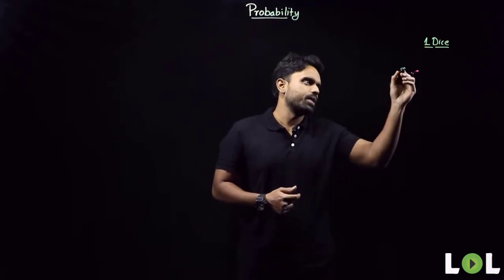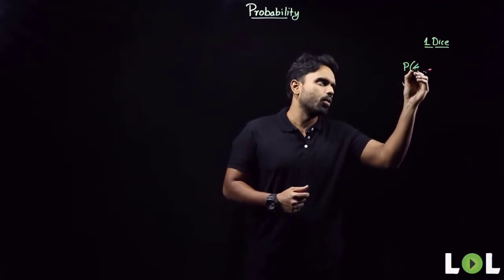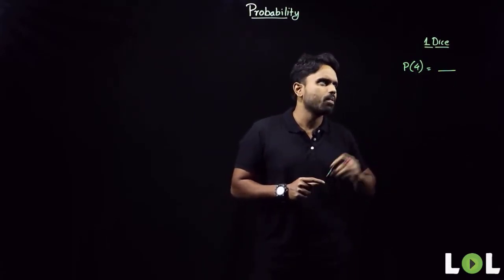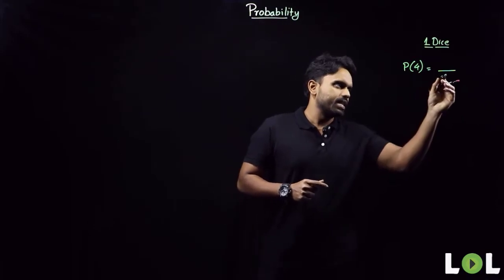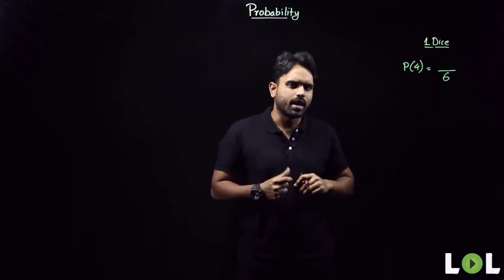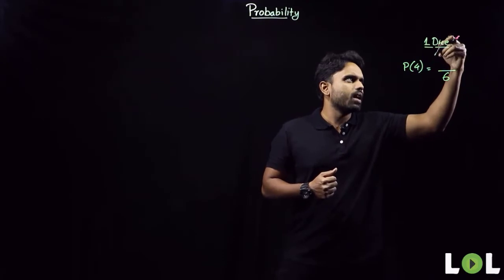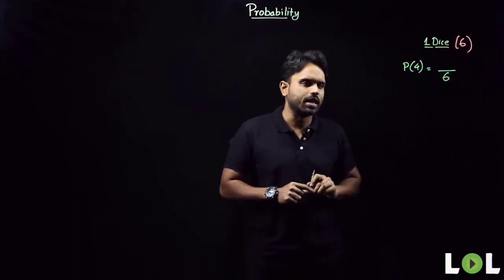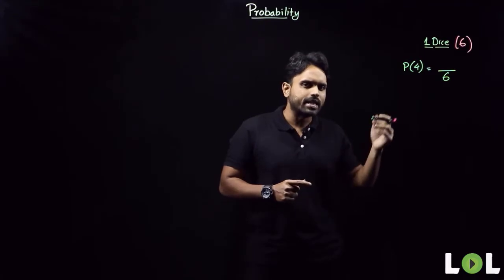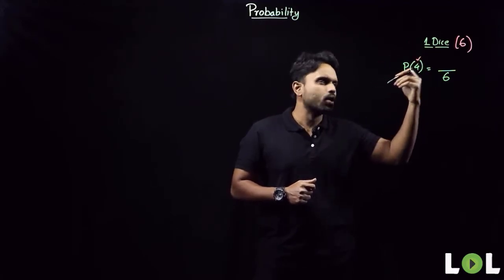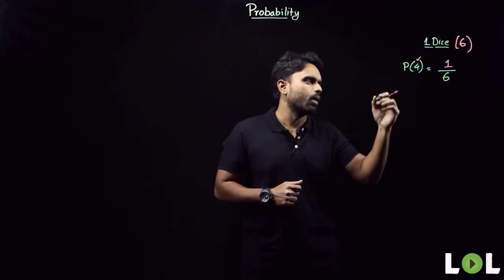Our first question involves rolling one die. What is the probability of getting the number 4? We always start with the denominator — total number of cases. When you roll one die, the total number of outcomes is six: it can be 1, 2, 3, 4, 5, or 6. The favorable case is getting a 4, which is just one. So the probability is 1/6.